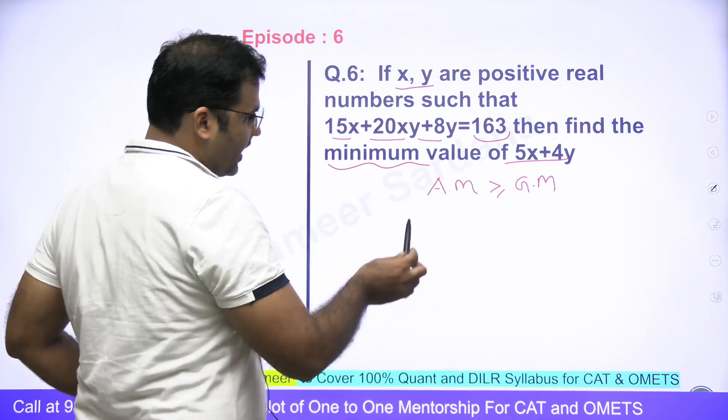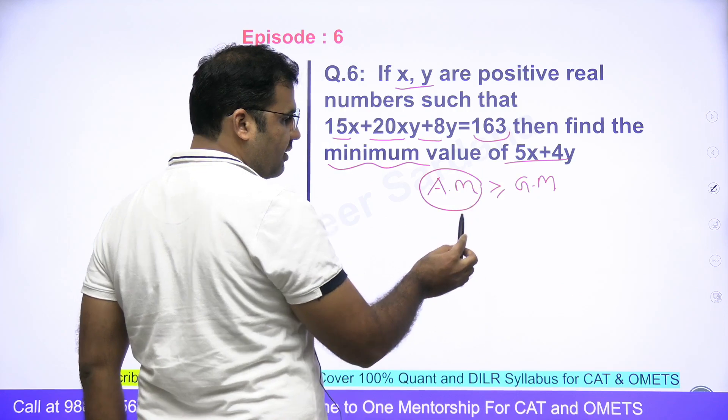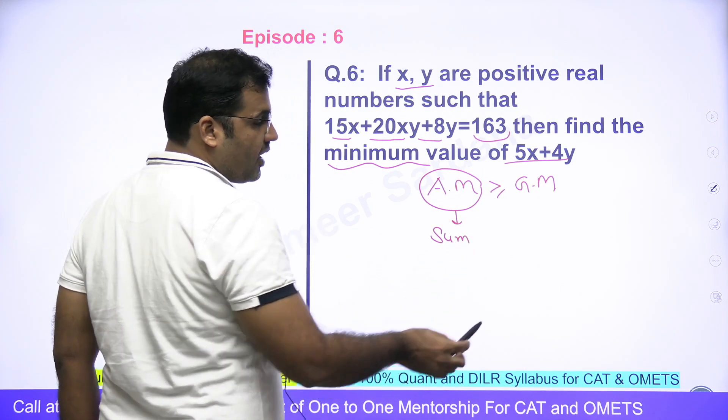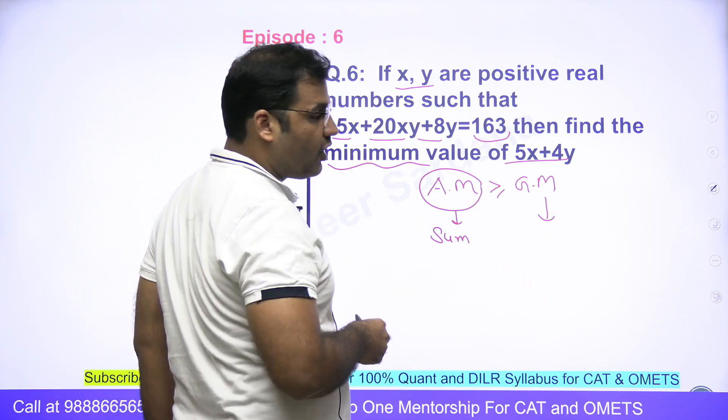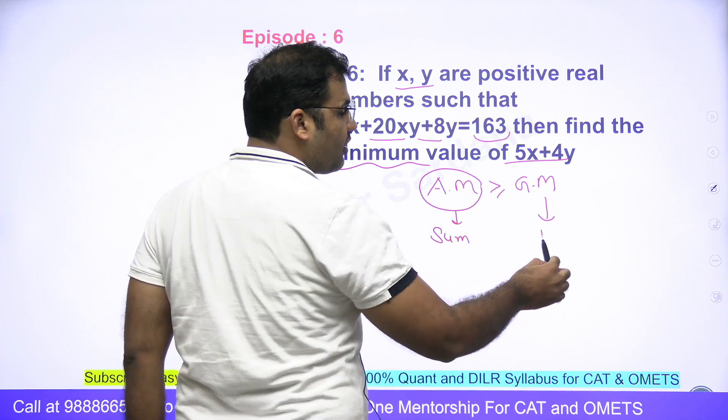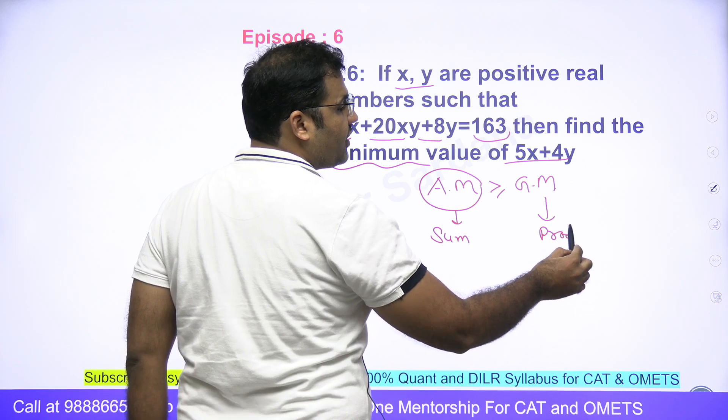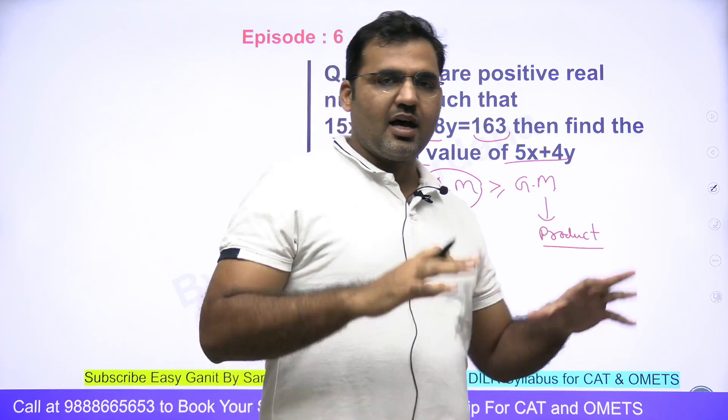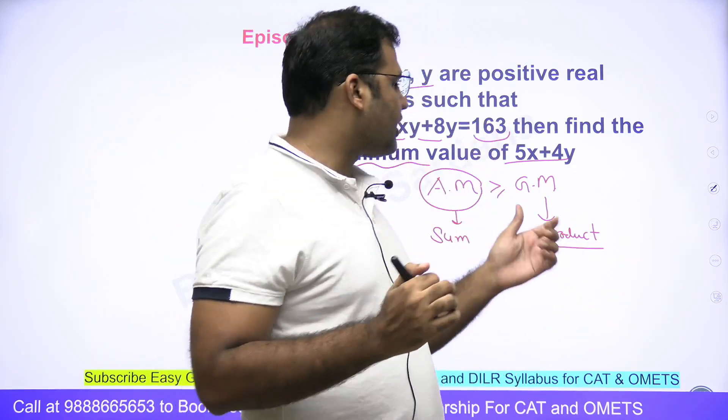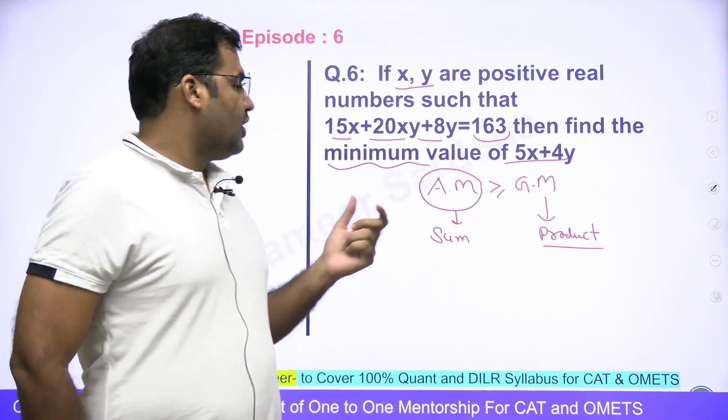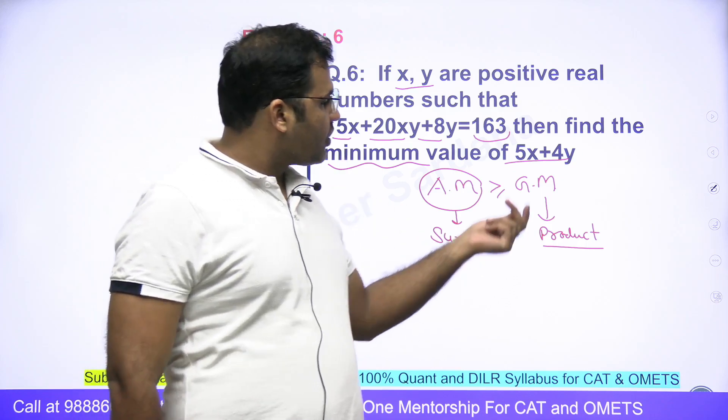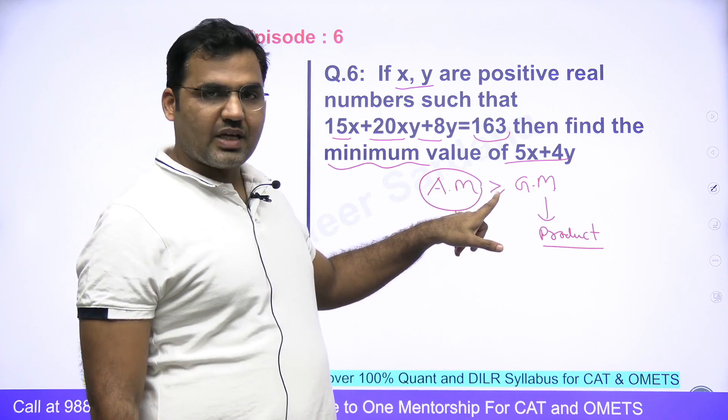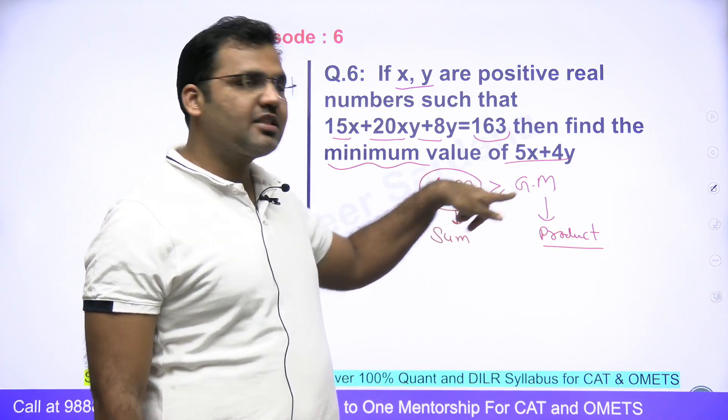Next, you should know that whenever we find the arithmetic mean, we always take the sum of the numbers in the numerator. And whenever we find the geometric mean, we always take the nth root of the product of the numbers. So the sum comes to the AM, and the product comes to the GM. There's the sign of inequality.